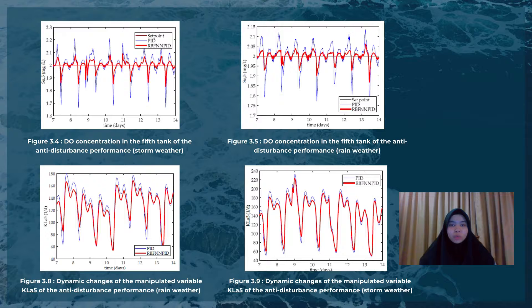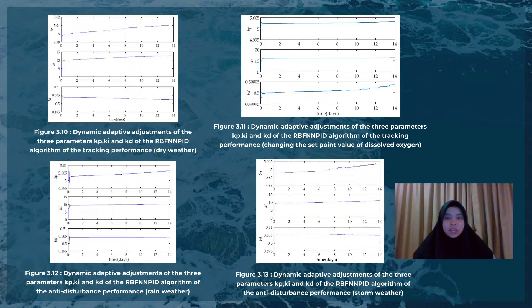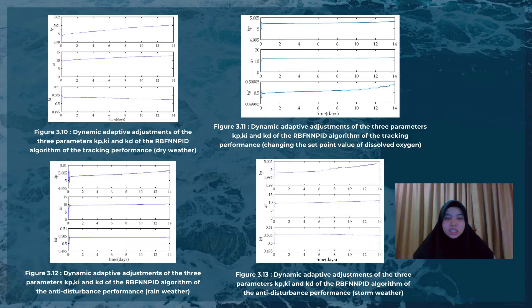Figures 3.10, 3.11, 3.12, and 3.13 illustrate the curves of PID parameters being changed dynamically and adaptively. By using a suitable process control system, it not only prevents sludge bulking but also reduces aeration energy in a wastewater treatment plant. The simulation results show that the RBF-NPID algorithm performs better and can greatly improve the control of dissolved oxygen concentrations in reactor 5 compared to the PID algorithm in terms of tracking, anti-jamming, and robustness, thereby lowering the cost of aeration in plants performing activated sludge processes.